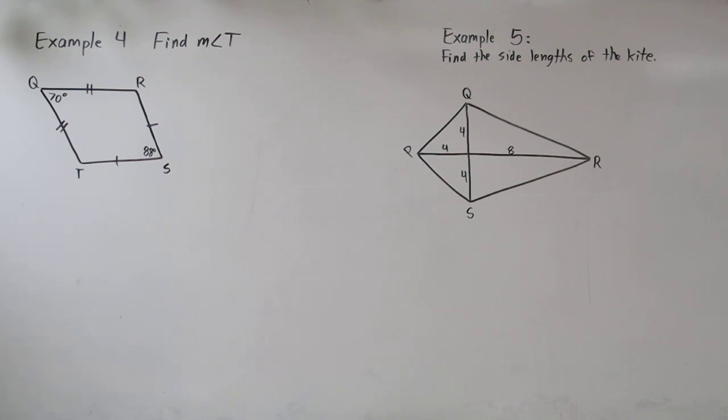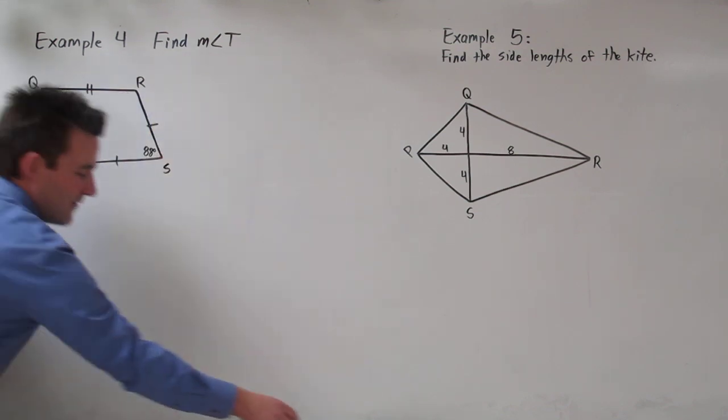Another property of kites is they have exactly one pair of congruent angles. So since these angles right here aren't congruent, our congruent pair must be these two right here. One of which is t. That's what we're trying to find.